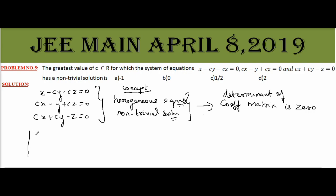So the coefficients are 1 minus c minus c, c minus 1 c, c c minus 1 equal to 0.